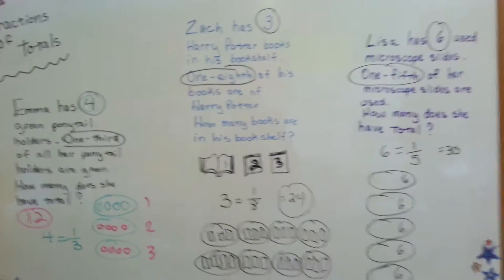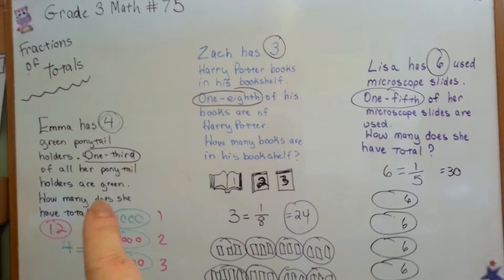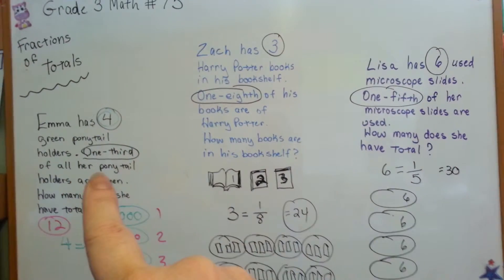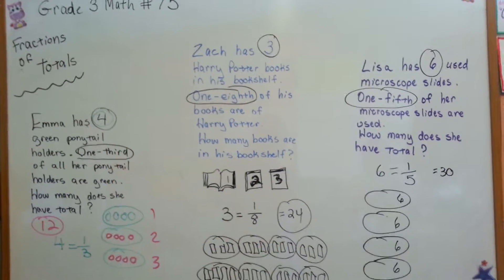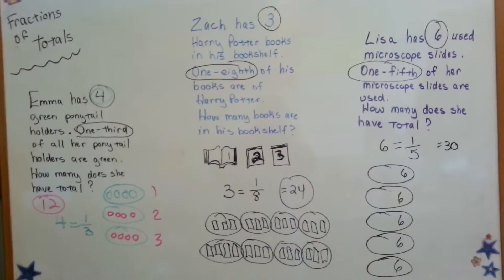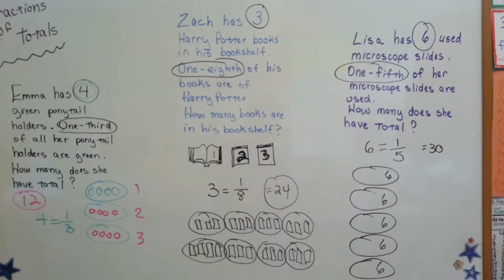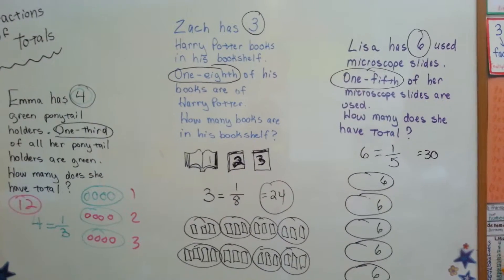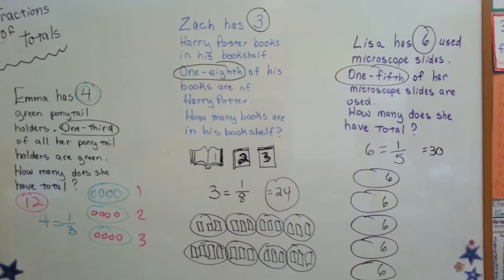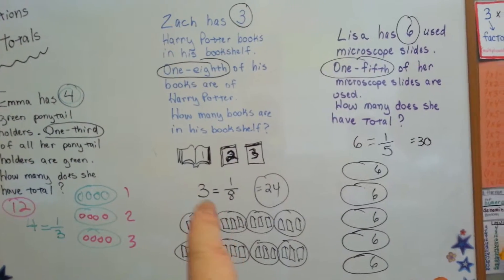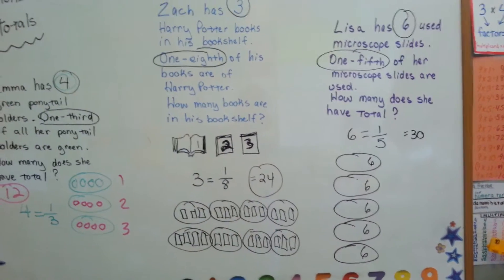So when you're trying to find a fraction of a total, there's a couple of things that you can do. When it's a word problem, circle the important parts. Like, what is the fraction? And what is the number? And then that'll help you. Draw a picture to help you figure it out. Pictures always help. I know college students who use pictures to help them figure out word problems. You can multiply the number by the denominator. And that'll tell you.